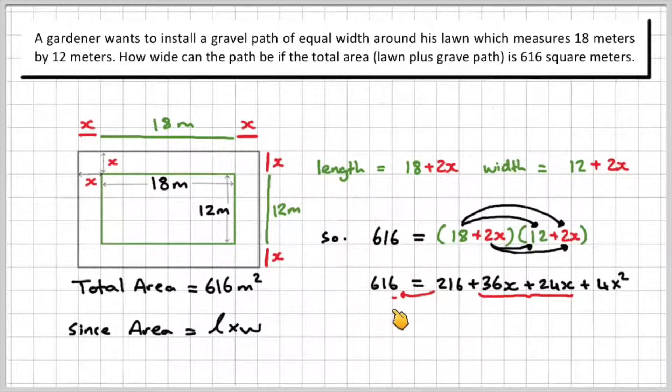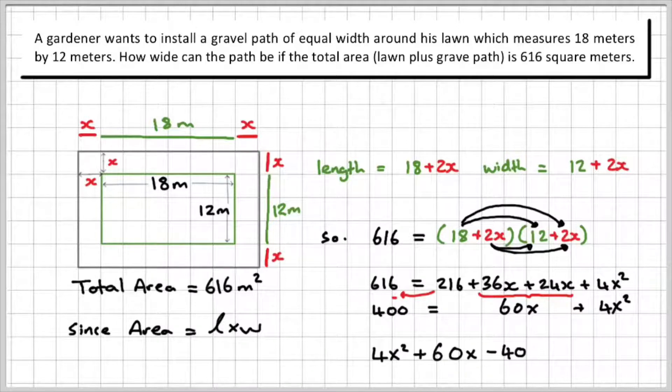I can minus the 216 on the opposite side, and I can collect the like terms here. So that gives me 400. 616 minus 216 is 400. Collect the like terms give me 60X, and I'm left with the 4X squared. If I just rearrange this, I can write 4X squared plus 60X minus 400 equal to 0. AX squared plus BX plus C. That's a standard form of writing a trinomial quadratic equation.